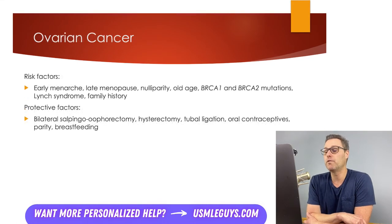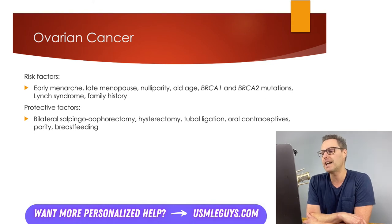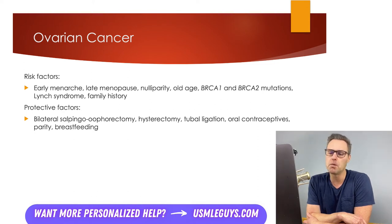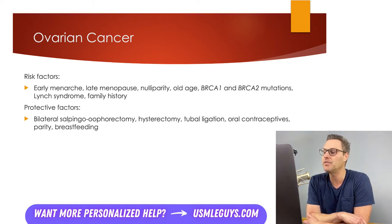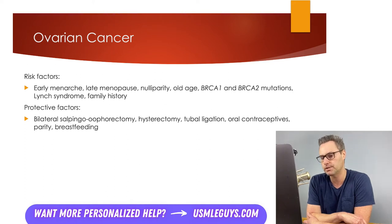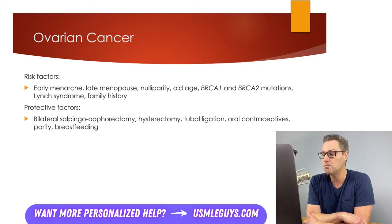Moving on now to ovarian cancer. Epithelial cancers of the ovaries, fallopian tubes, and peritoneal carcinomas are all managed together due to their clinical similarity. The epithelial cells are much more likely to undergo malignant transformation than the germ cells, so the focus on ovarian cancer in this lecture is going to be on epithelial cancers. Rare germ cell tumors are covered in lung and mediastinal tumor lectures in the pulmonary section.